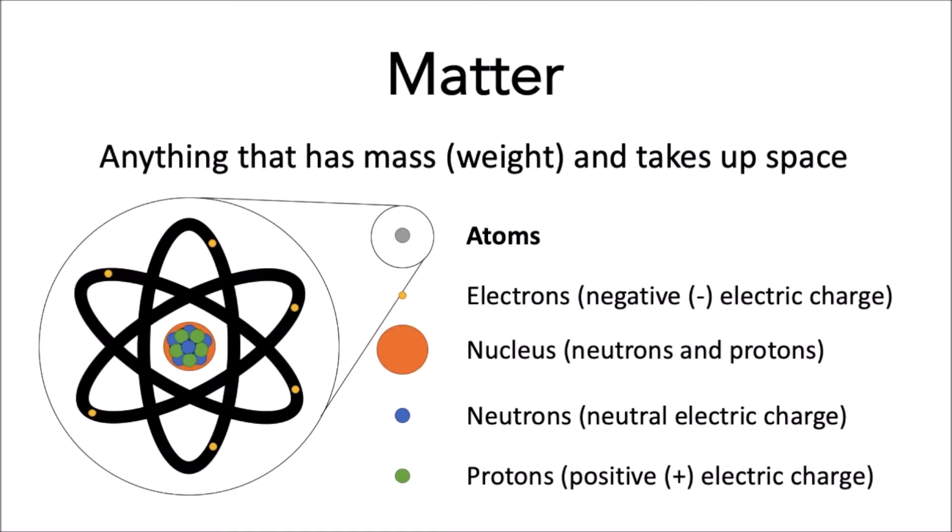And these atoms are made up of even smaller particles. Electrons are negatively electrically charged particles that zoom around the nucleus, which is a tight ball of neutrally electrically charged particles called neutrons, and positively electrically charged particles called protons.